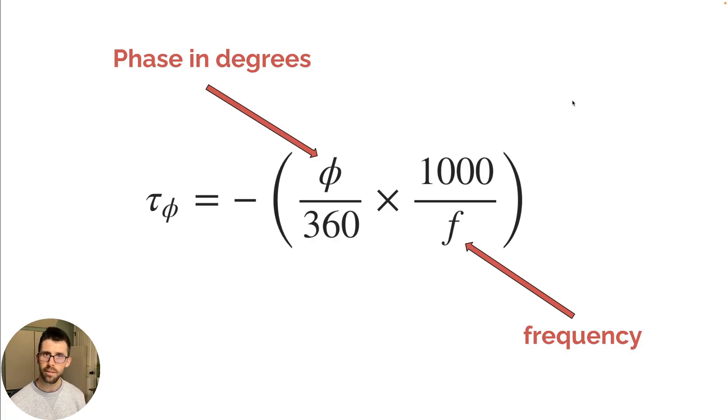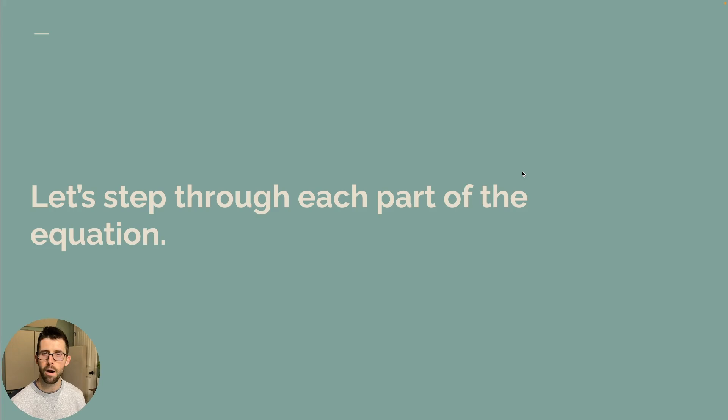So we can now plug this into the equation. So phase delay is equal to negative in parentheses, the phase in degrees divided by 360 times 1000 over the frequency we are concerned with. So now let's step through each part of the equation here and start to plug in what we have.